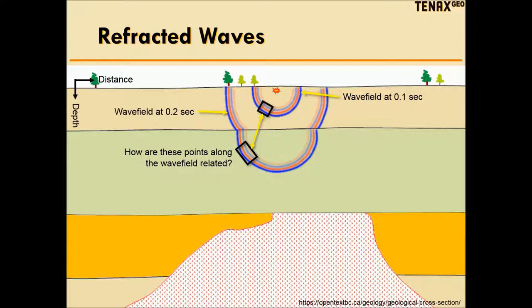Here I show the wave field at 0.1 seconds and at 0.2 seconds. We want to understand how a piece of energy on the wave front at 0.1 seconds evolves to reach the wave front at 0.2 seconds.